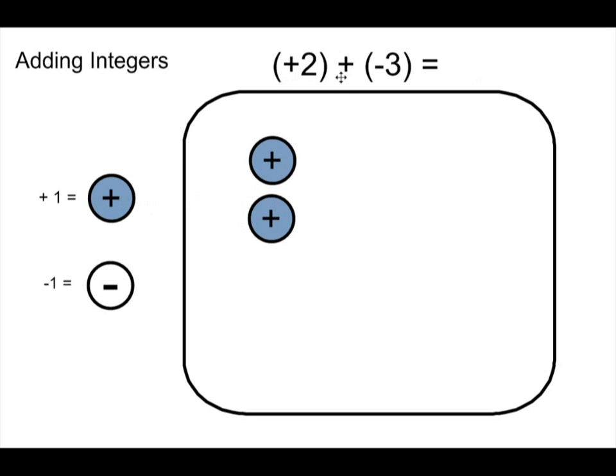The math sentence tells me to add. So I'm going to add another group of tiles together with this group of tiles. Positive two plus negative three. Now I'm going to throw in my three negatives. I've added three negatives to two positives.